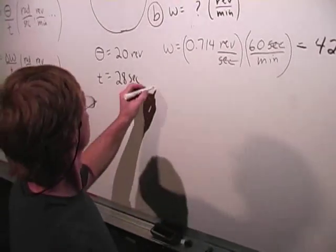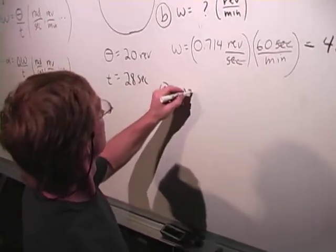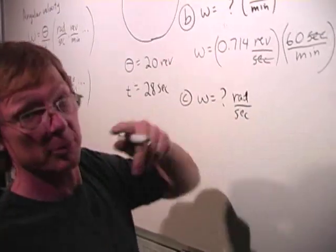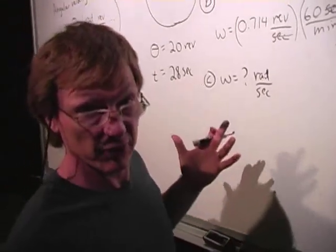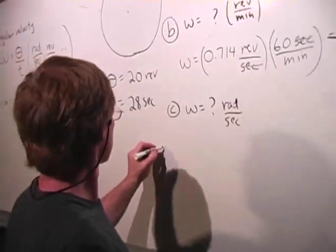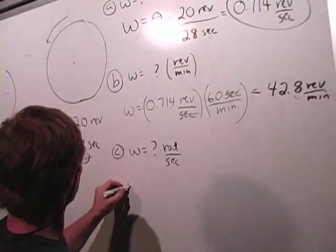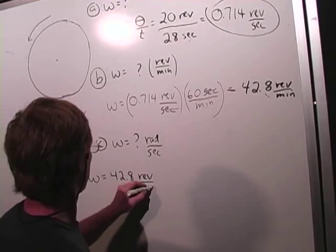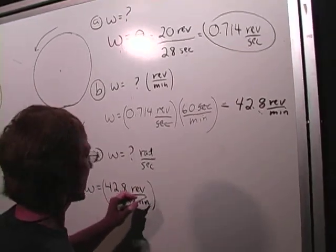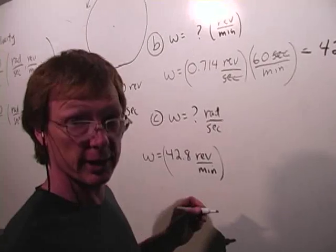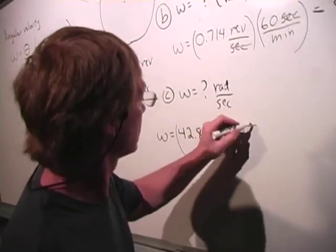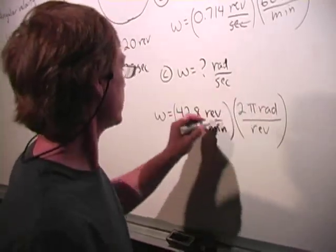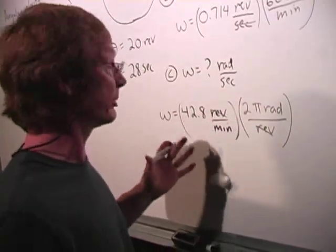One more. Let's get this in radians per second. It would be quicker to go from A, but let's do it off revolutions per minute so you see the full conversion. So the angular velocity is 42.8 revolutions per minute. I need to get revolutions. There are 2 pi radians and a revolution. So there are 2 pi radians per revolution. Revolutions cancel. I've got radians per minute. That's good.